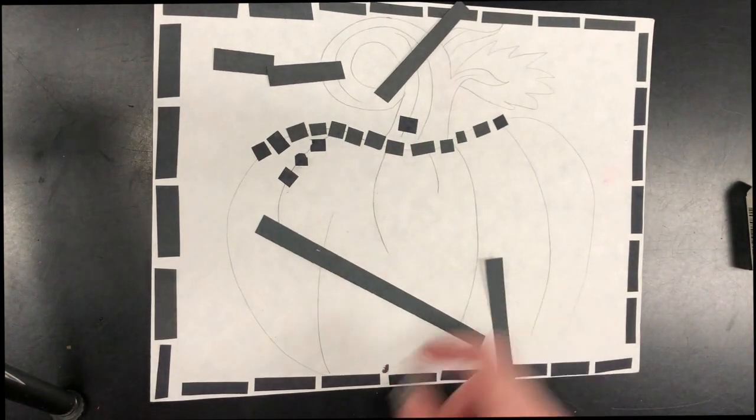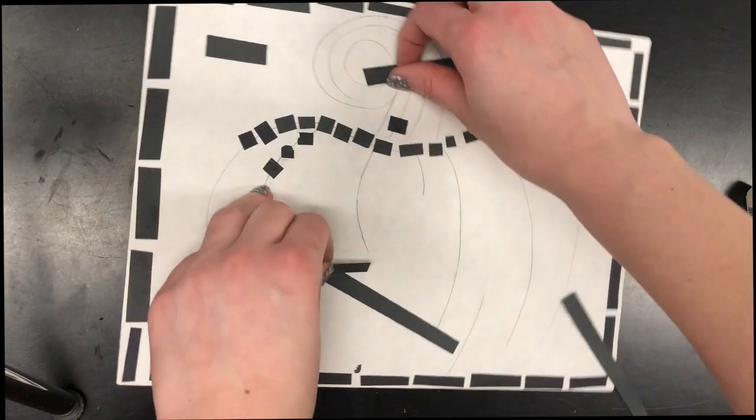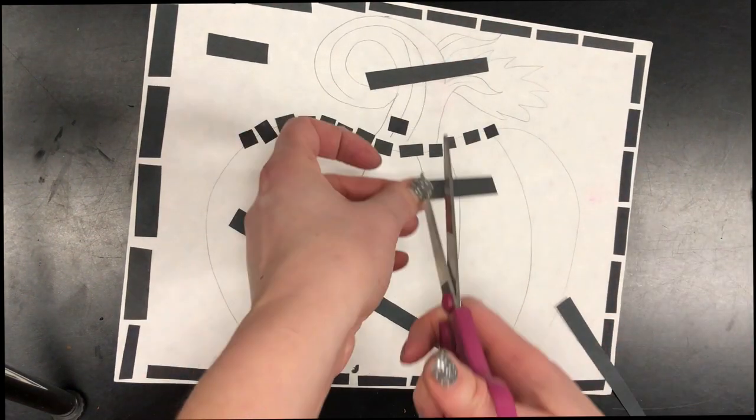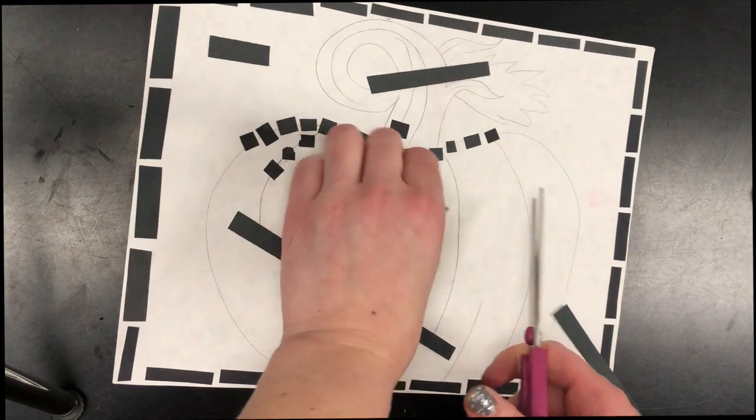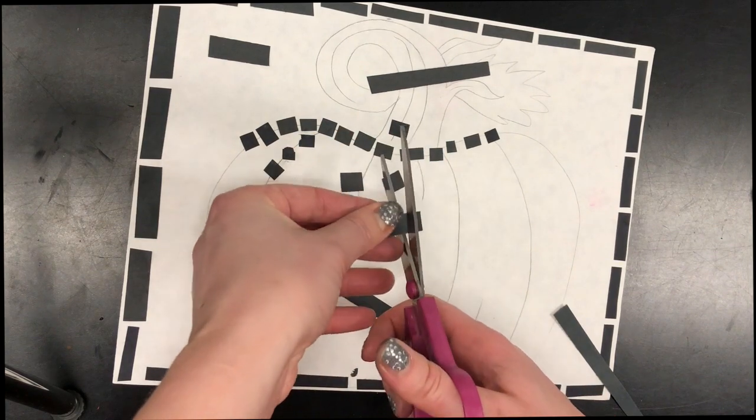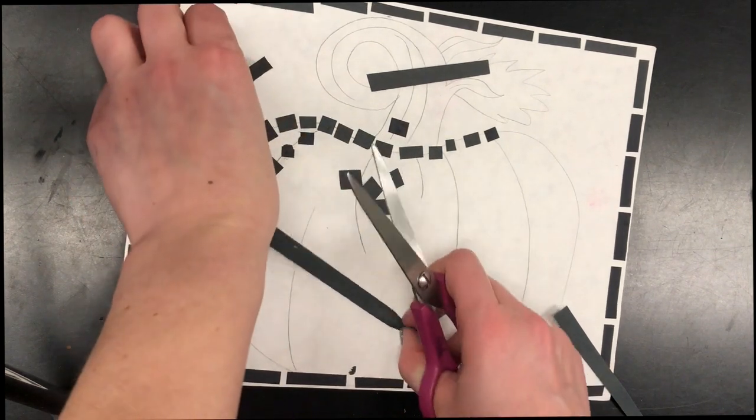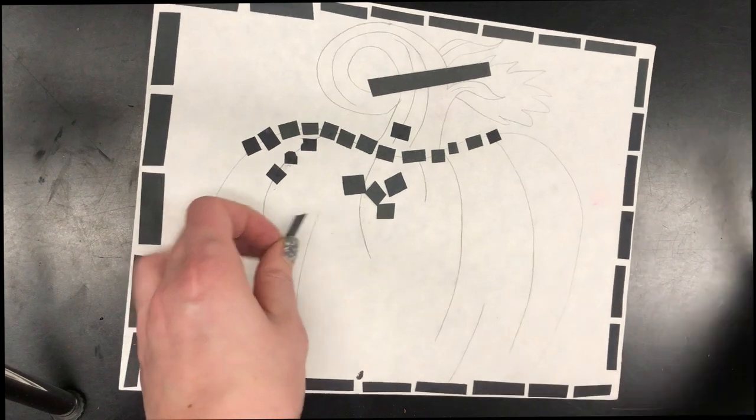Once you have that done, then you're going to start outlining the smaller details. So you're going to need to cut smaller shapes. So they should be more like squares. So I'm just going to cut a bunch of these. Don't cut too many though. But I'm just going to cut up the small ones that I already cut.